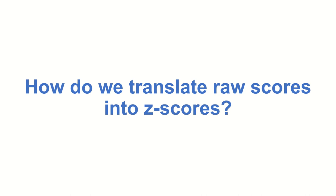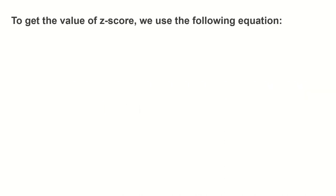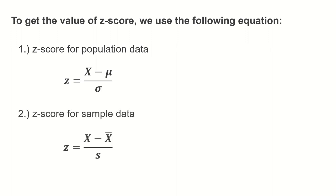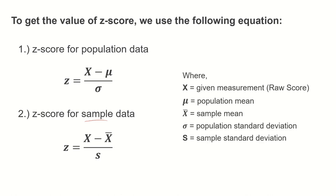To convert raw scores into Z-scores, we use this equation: Z = (X − μ) / σ for population data, where X is the raw score, μ is the population mean, and σ is the population standard deviation. For sample data, we use: Z = (X − X̄) / S, where X̄ is the sample mean and S is the sample standard deviation. In our examples, we will suppose the data came from a population.